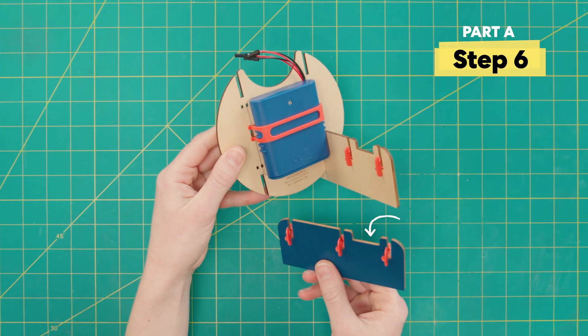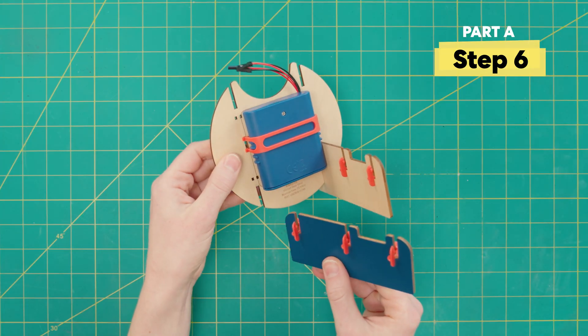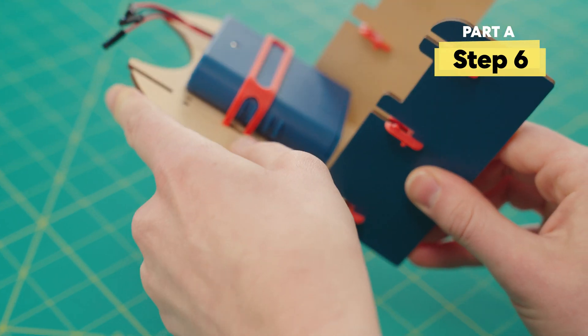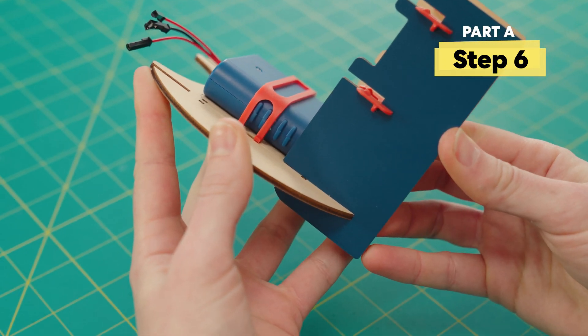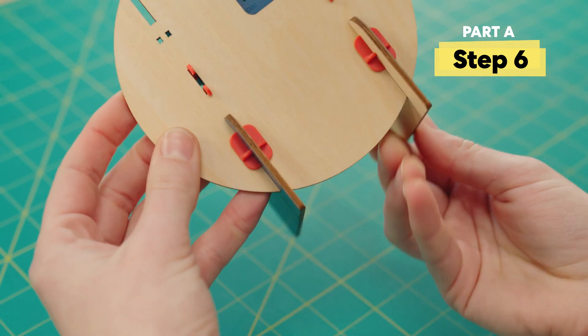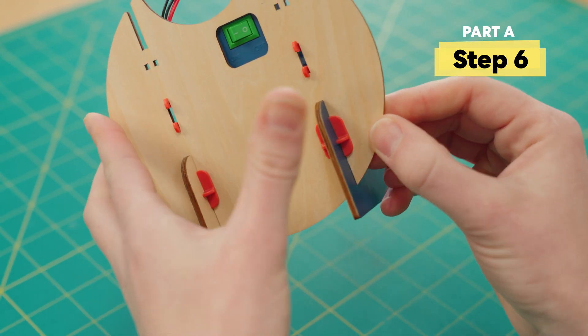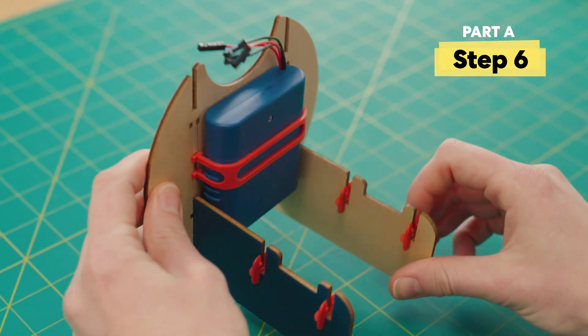Again, double check that that notch is on the other side and then slot into the slot. Make sure that these slots are pushed in all the way. You'll be able to see if they're not because that little orange piece will be kind of like bent out of shape.